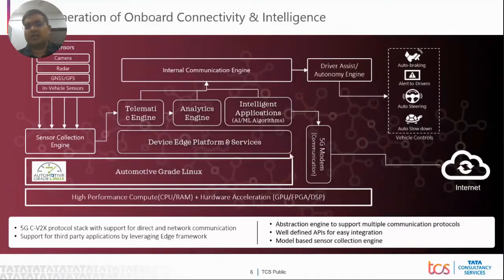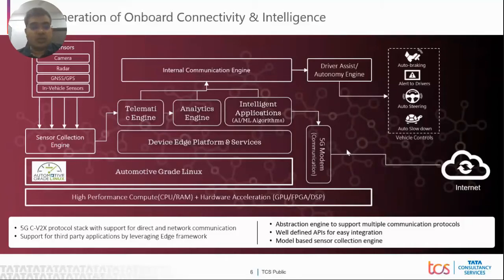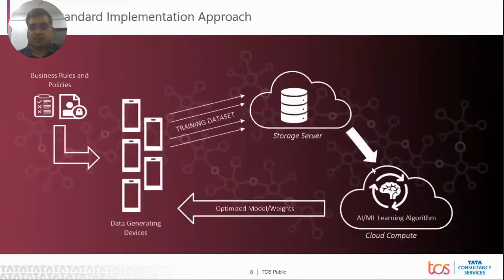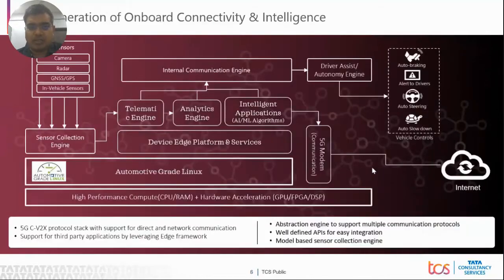Another key aspect to highlight is 5G connectivity. It brings direct or indirect communication with the network, helps you exchange sensor data toward the network, and also receive sensor data from nearby vehicles or from the network. Coming back to the intelligence building block — in that architecture we talked about intelligent applications, analytics engine, and telematics engine. Let me expand on that a bit more.